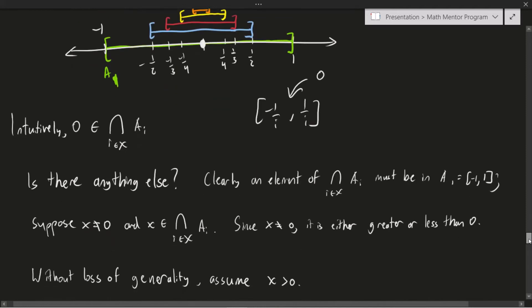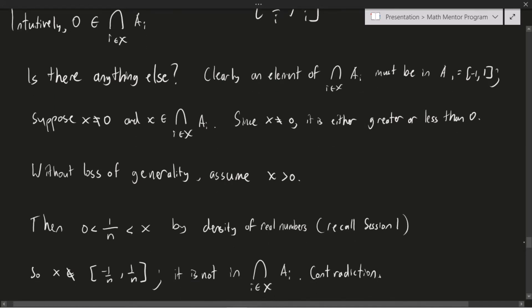If you think about it a little, you'll probably come up to the answer no, but let's prove it. So again, an element of the intersection has to be common to every single one of the Ai. So in particular, it must be in A1. And A1, again, contains all the numbers from negative one to one inclusive. And so now we can start our contradiction. We're going to assume that X is non-zero and X is still in the intersection of the Ai. Now, since X is not zero, it's clearly either greater or smaller than zero. And so we can just assume because the argument will work the exact same way that X is greater than zero.